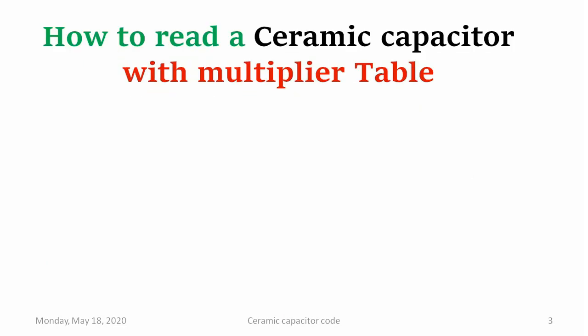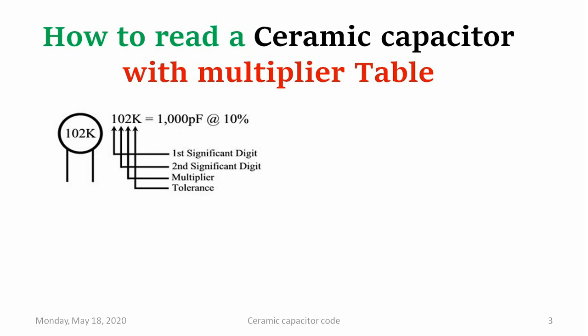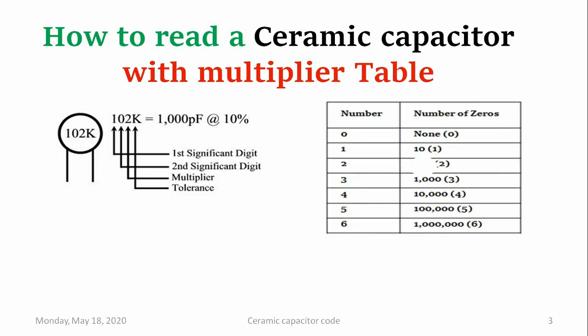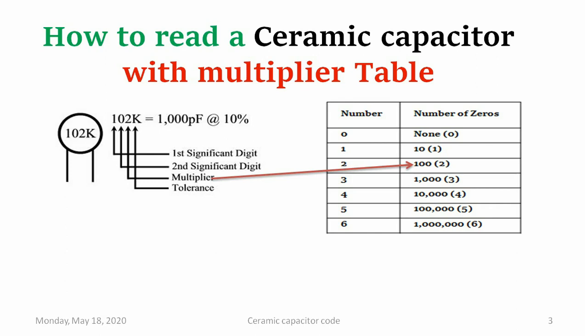How to read a ceramic capacitor with the multiplier table? We have a capacitor value of 102 K and a multiplier table. The multiplier digit varies from 0 to 6, and it indicates the number of zeros which we have to append after the first and second significant digits.